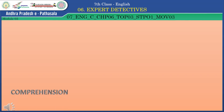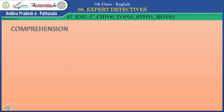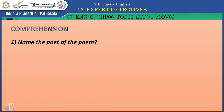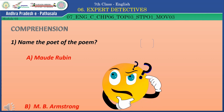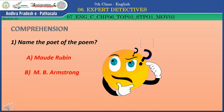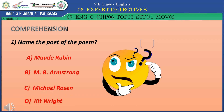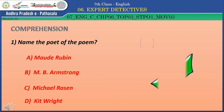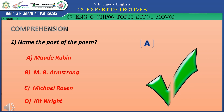Children, let's move on to the comprehension on the poem. Question 1: Name the poet of the poem. Option A: Maude Rubin. Option B: M.B. Armstrong. Option C: Michael Rosen. Option D: Kit Wright. The correct answer is Option A — Maude Rubin.